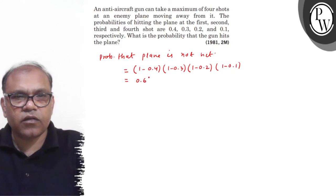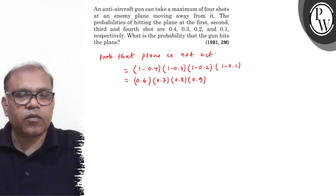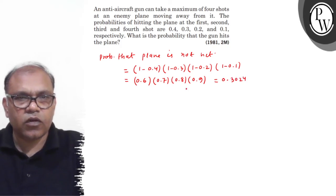It will be 0.6 times 0.7 times 0.8 times 0.9. When you multiply these, it will be 0.3024.